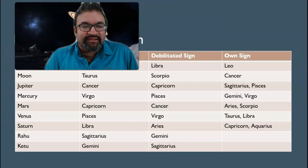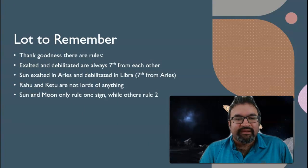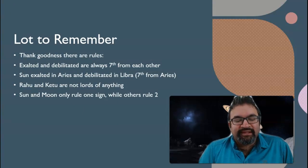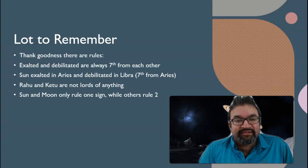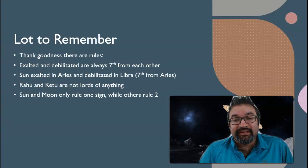How do you remember this in a succinct manner? The exalted and debilitated signs are actually the seventh house from each other. For example, the Sun is exalted in Aries and debilitated in Libra, because Libra is seventh from Aries. Also remember: Rahu and Ketu are not lords of any signs. And Sun and Moon are the only planetary bodies that rule only one sign, while all other planets rule two signs.